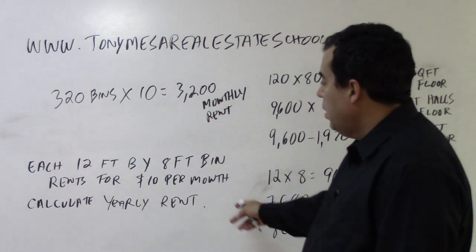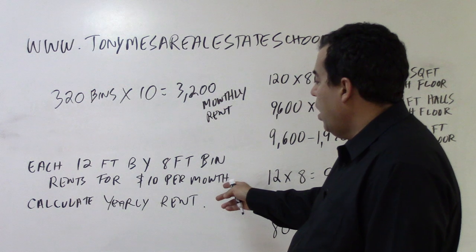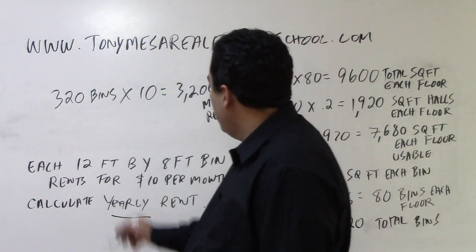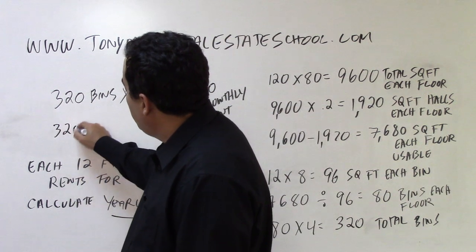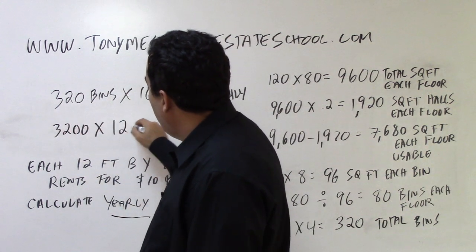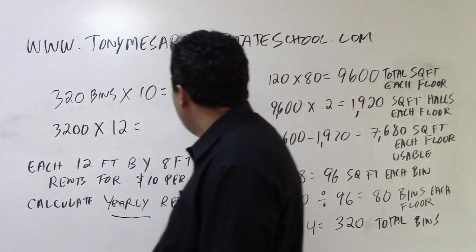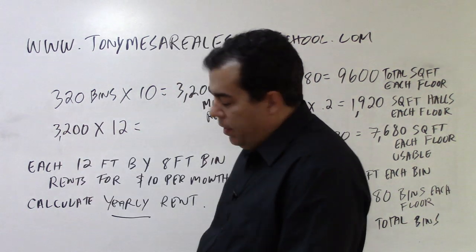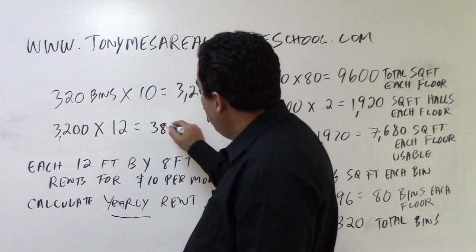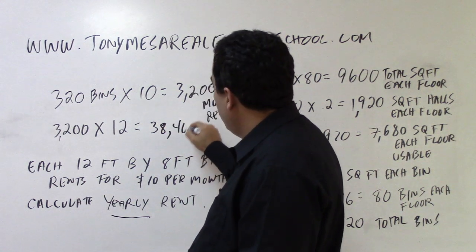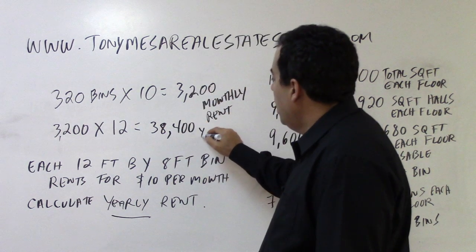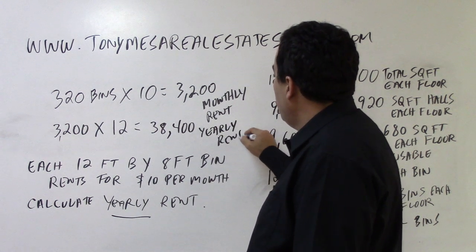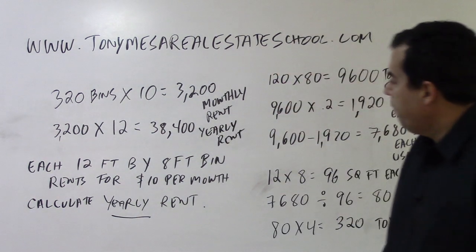But the question is not how much do you make per month — the question is to calculate the yearly rent. So we take that $3,200 and multiply it by 12 months in the year. $3,200 times 12 gives us $38,400, and that is the yearly rent or yearly income you get from that property.